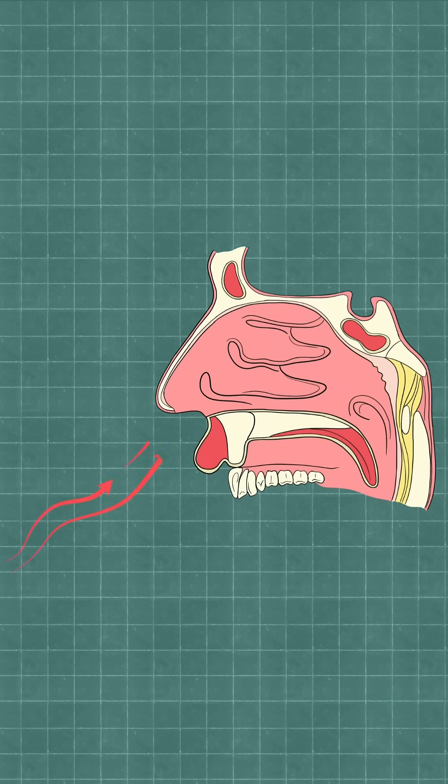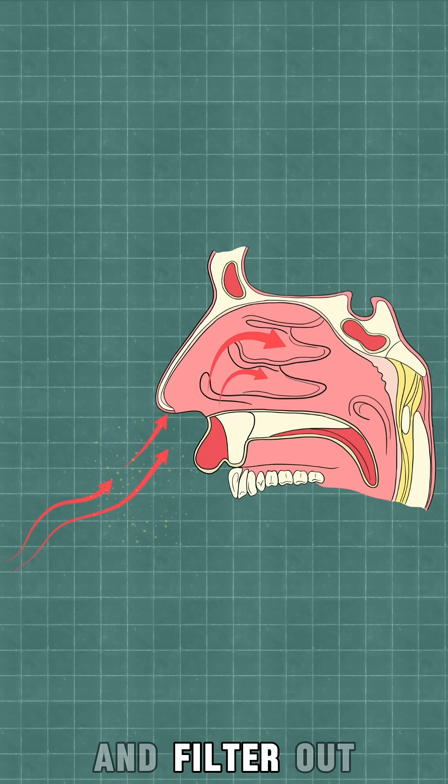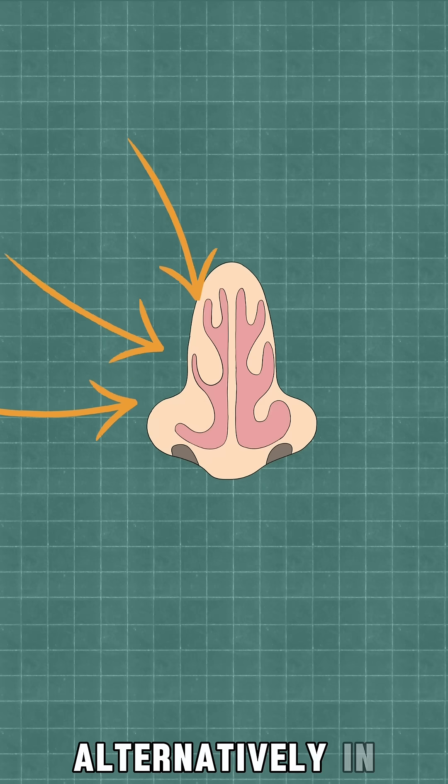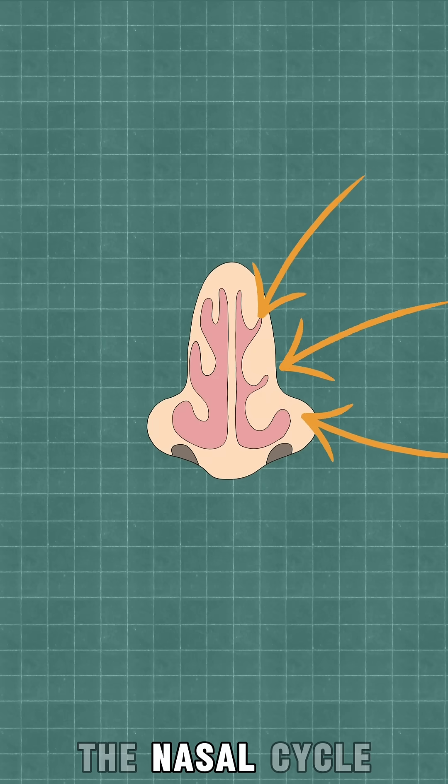These nasal turbinates help regulate the flow of air and filter out air particles. These can also swell and shrink alternatively in each nostril, resulting in the nasal cycle.